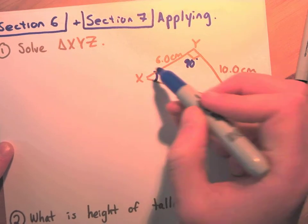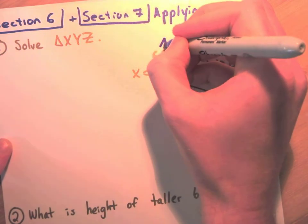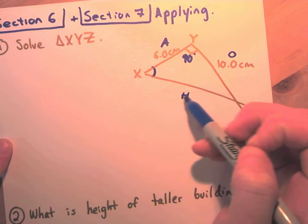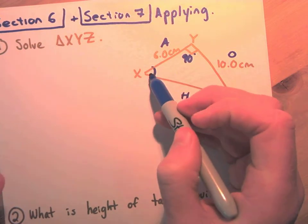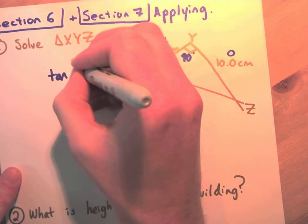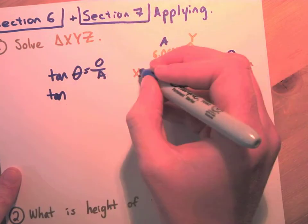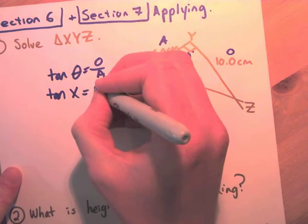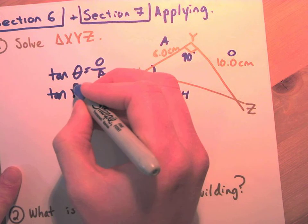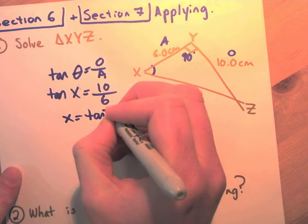Labeling the triangle from angle X: O is opposite (10), A is adjacent (6), H is the hypotenuse — we don't have H and aren't finding it yet. We use O and A, which means tangent: tan X = O/A = 10/6. To solve for the angle, we use the inverse: X = tan⁻¹(10/6).